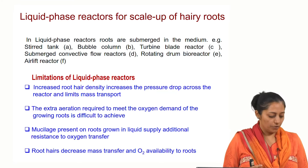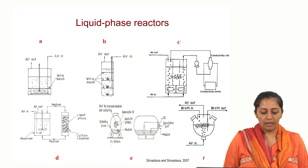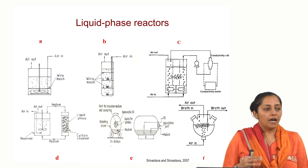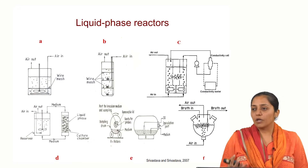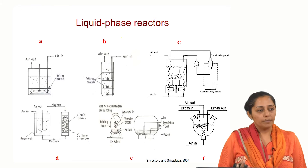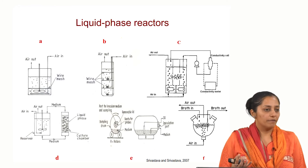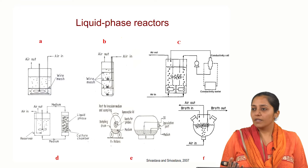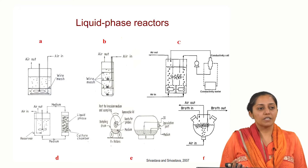For example, if you are using a packed bed type reactor system, then as the biomass starts growing there will be increased pressure drop with the increased root density, leading to mass transfer limitations.